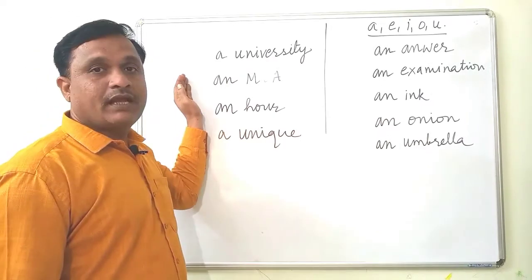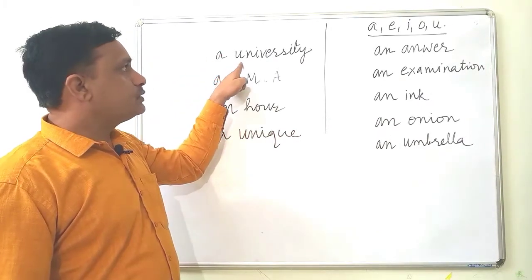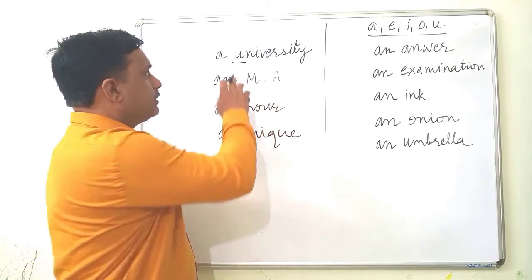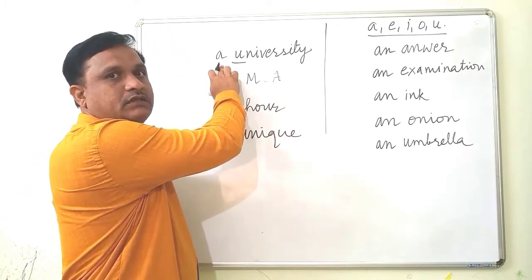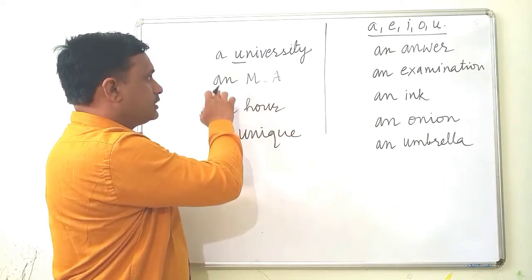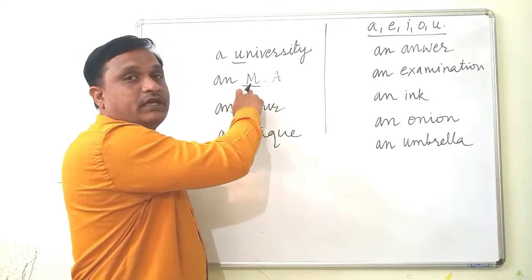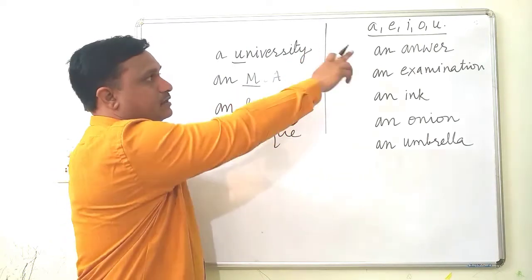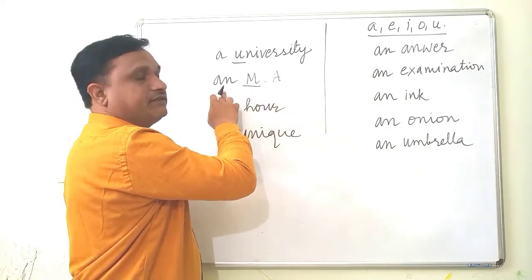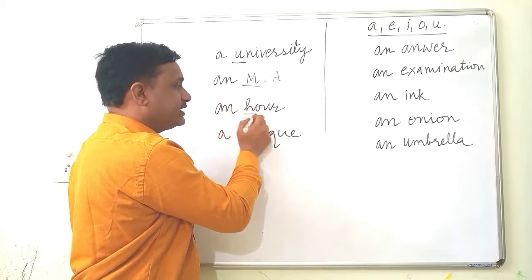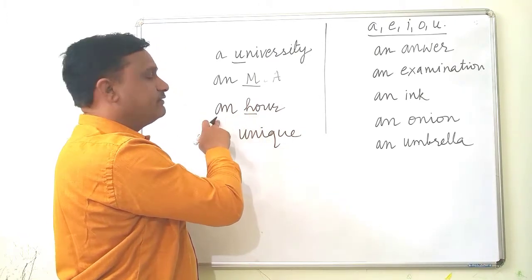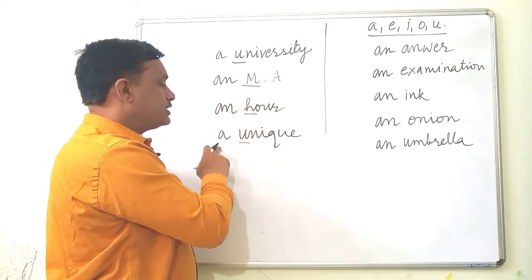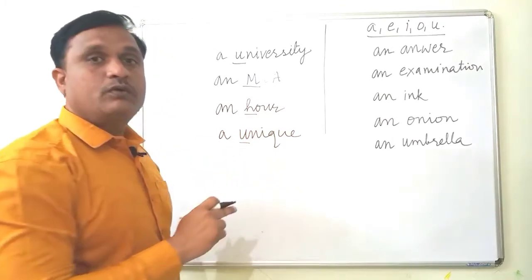Now let's study these tricky examples. First: 'university' — the word begins with U, a vowel letter. But here we use 'a university,' not 'an university.' Second example: the word begins with M, which is not a vowel letter — yet we still use AN. Third example: it begins with Y, also not a vowel letter — but still AN is used. And U is a vowel letter, but we are not using AN. So what could be the reason for this?